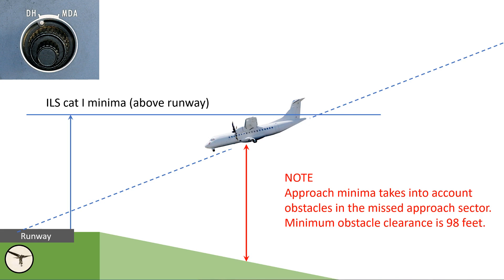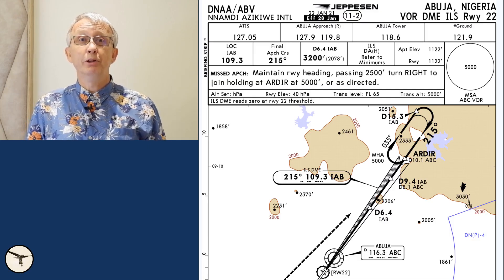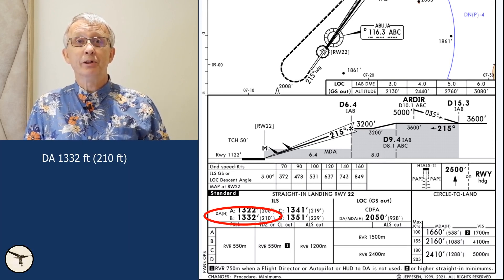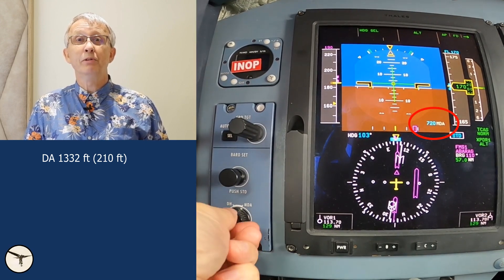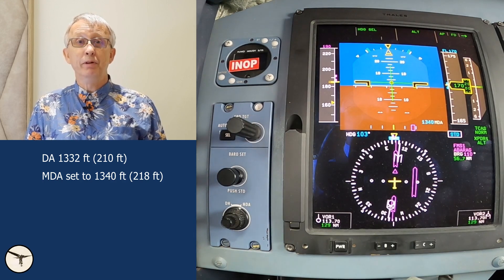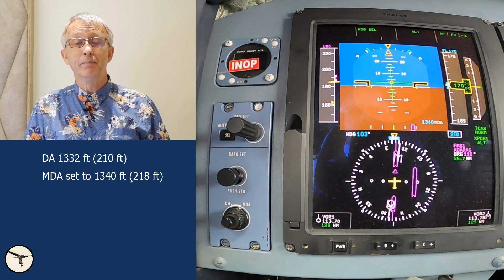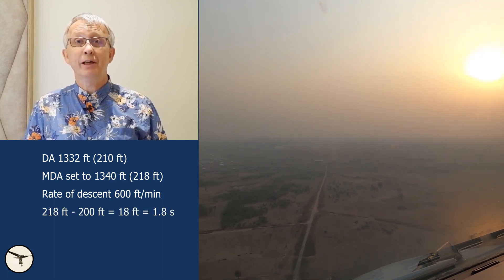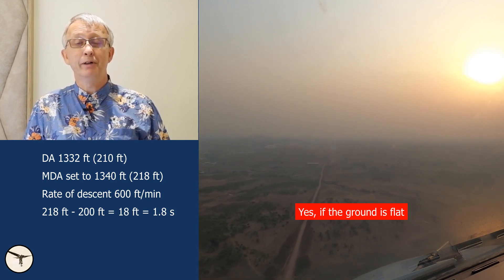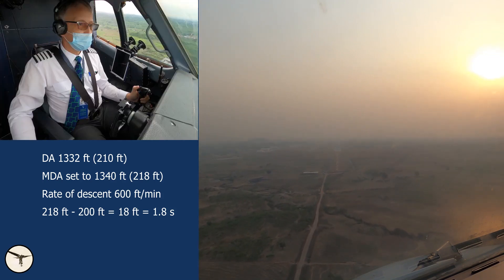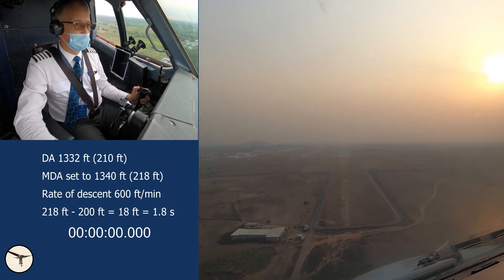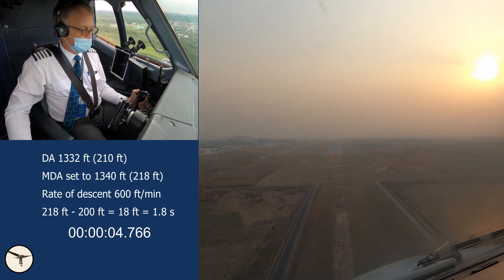Let me show you an example. This is the chart for the ILS approach to runway 22 at Abuja in Nigeria. We are flying on ATR 72, which is approach category B. The decision altitude is 1332 feet, or 210 feet above the runway threshold. The MDA has 10-foot increments, so we set MDA to 1340 feet. That means we will be 218 feet above the runway threshold at minima. The rate of descent is about 600 feet per minute, or 10 feet per second. Therefore, after passing minima, it should take 1.8 seconds before we reach 200 feet above the runway. Let's run the video. [Approaching minimums. Minimum. Minimum. 200.]